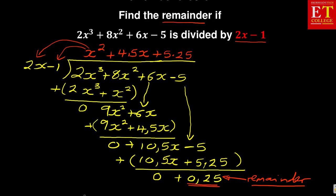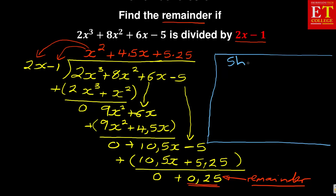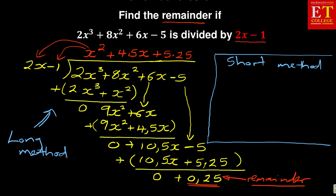But as I mentioned, there is a quicker way of doing it. There is a shorter version. So using the short method, we're going to say let f of x be equal to 2x cubed plus 8x squared plus 6x minus 5. And then we're going to take our divisor 2x minus 1 and equate it to 0.